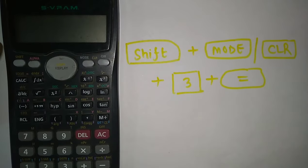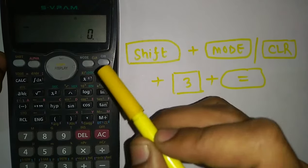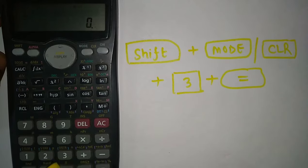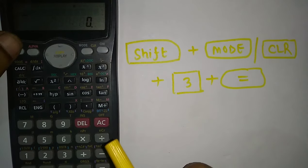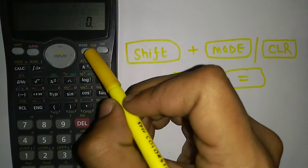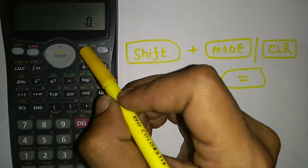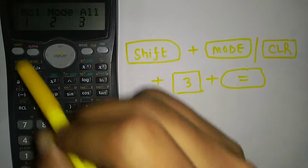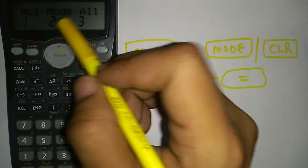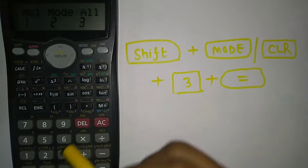To reset a scientific calculator, press the shift button, then press the clear button which is on the mode button, then select miscellaneous mode or all to select.